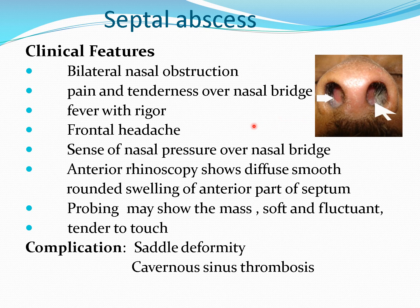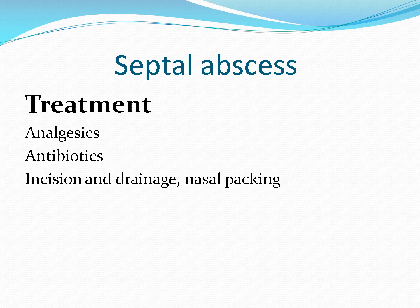If septal hematoma is not treated, it leads to secondary infection — septal abscess. Other causes of septal abscess include furunculosis, boil of the nose, and acute infections such as measles and typhoid. Clinical features are similar but with severe pain, the patient will be febrile, there will be severe tenderness and redness over the tip of the nose, and purulent discharge may be seen from the nasal cavities. If untreated, there will be saddle deformity due to necrosis of cartilage. The lethal complication is cavernous sinus thrombosis because of valveless veins — the infection can spread intracranially.